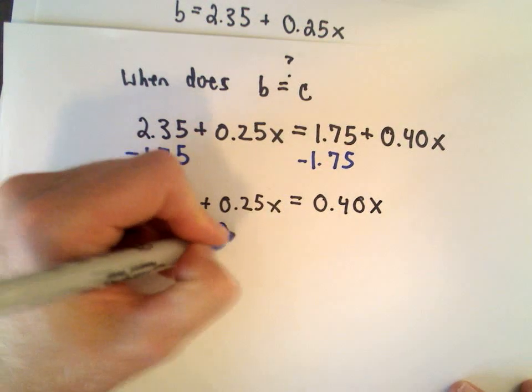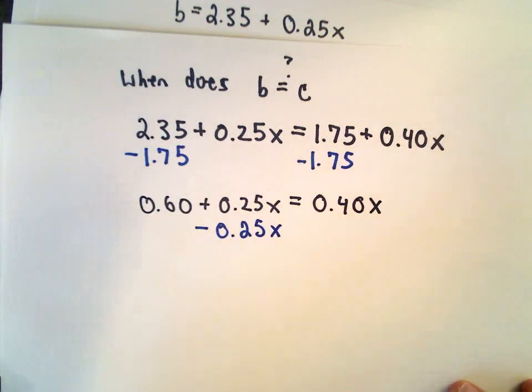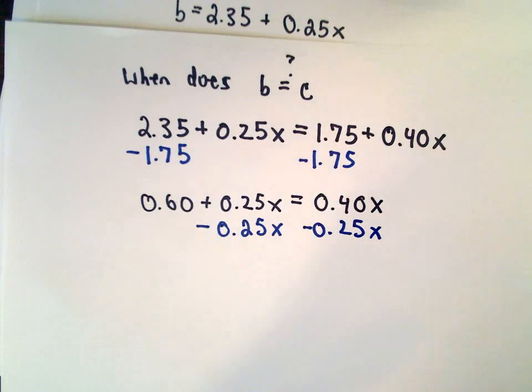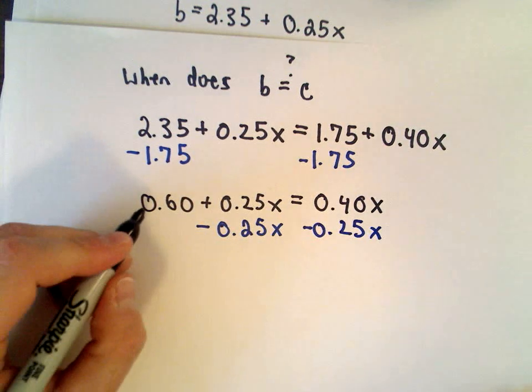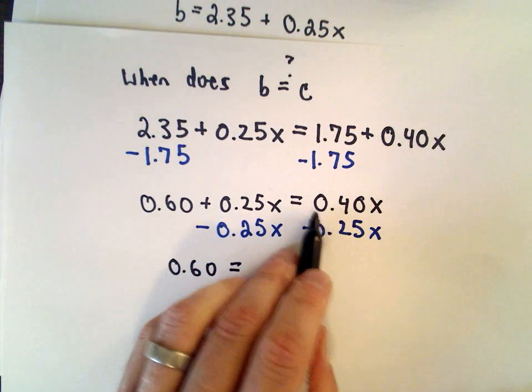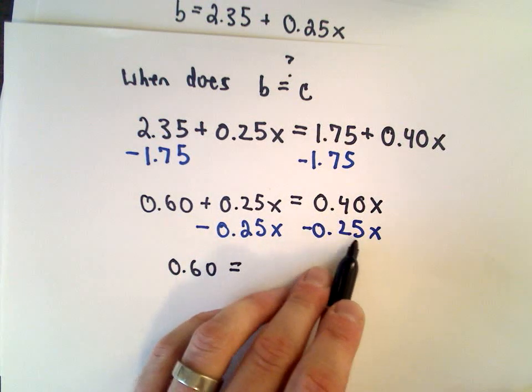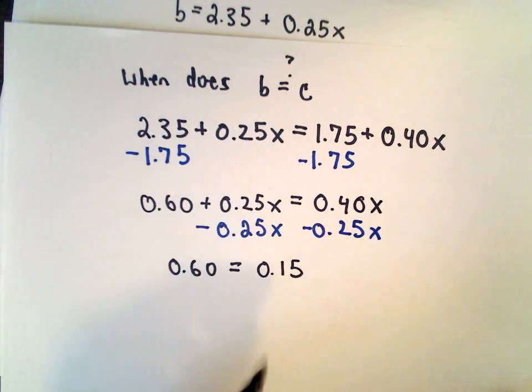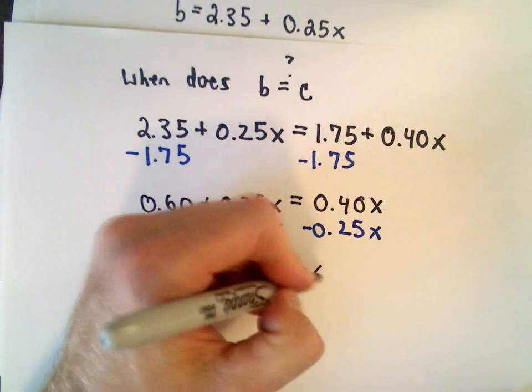Okay, so next I'm going to get my x's on the same side, so I'm going to subtract 0.25x from both sides. So that's 0.60 left on the left side. 0.40 minus 0.25, well forty cents take away twenty-five cents would leave you with fifteen cents, or I would have 0.15x.